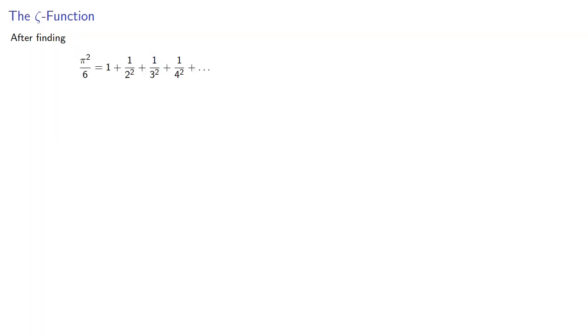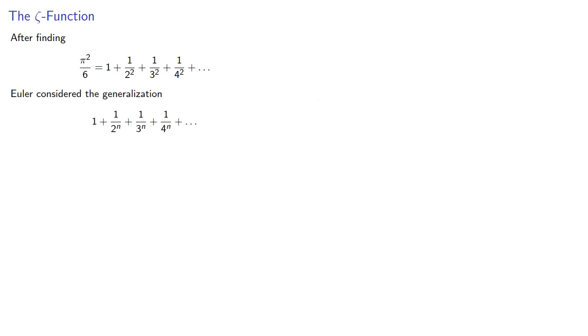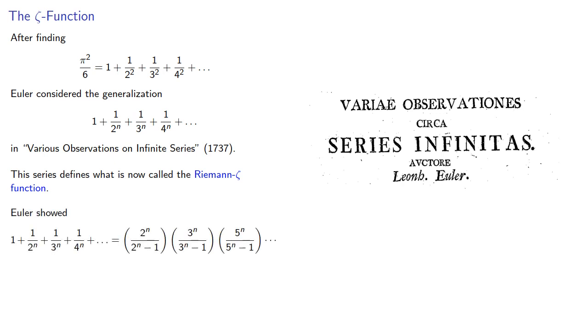After Euler found the sum of the reciprocals of the squares, Euler considered a generalization: the sum of the reciprocals of the n-th powers in Various Observations on Infinite Series. This series defines what is now called the Riemann zeta function. Euler's main result was showing that this series could be written in product form where the factors have the form p to the n over p to the n minus 1, where p is a prime number. This connects the Riemann zeta function to the theory of prime numbers.